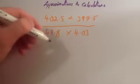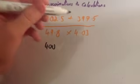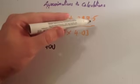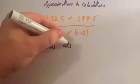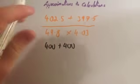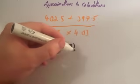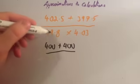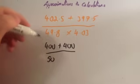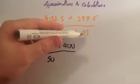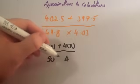Let's round these to one significant figure. Well, 402.5 would round to 400 to one significant figure. 397.5 would round to 400 to one significant figure. On the denominator, 49.8 would round to 50 to one significant figure. And 4.03 would round to 4 to one significant figure.